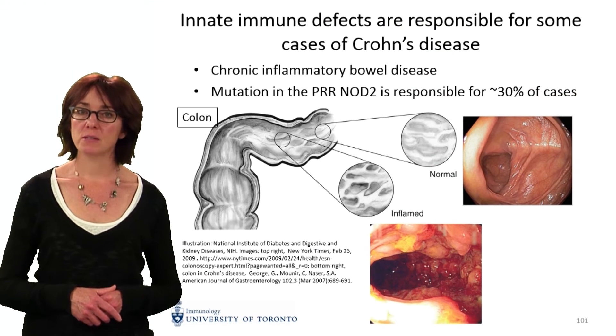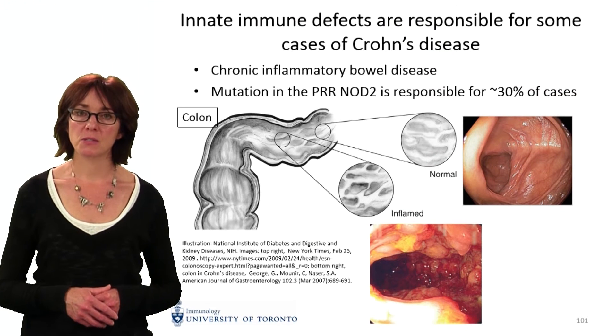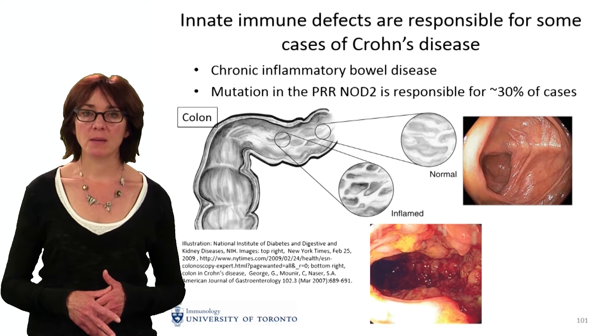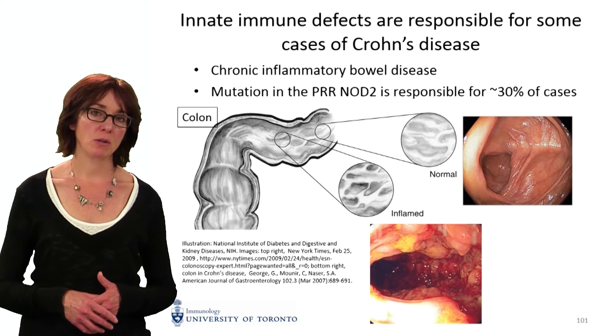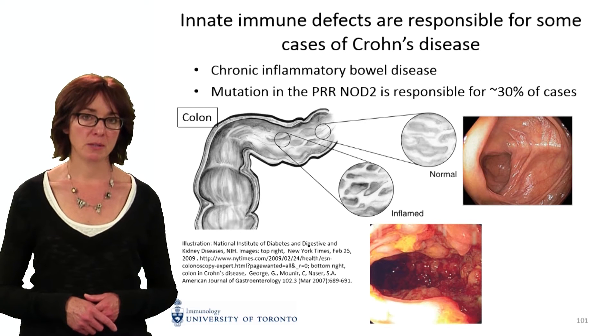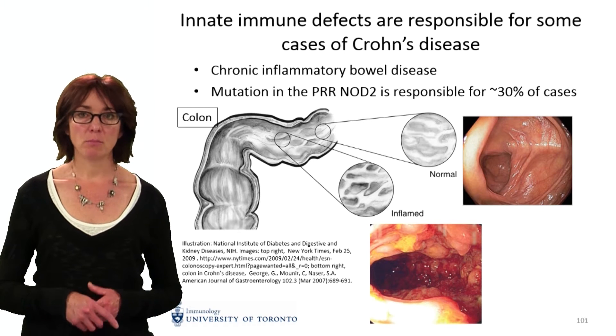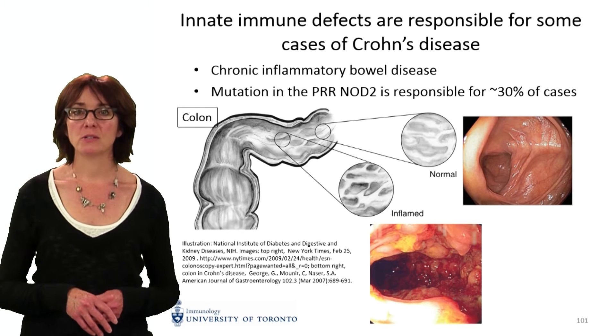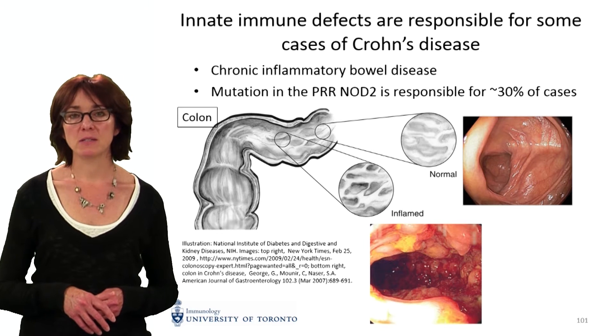In contrast, if we look at someone that has Crohn's disease, the colon is very inflamed and has what we call a cobblestone appearance. There are blisters and these really awful lesions that are present on the inside of the intestine.